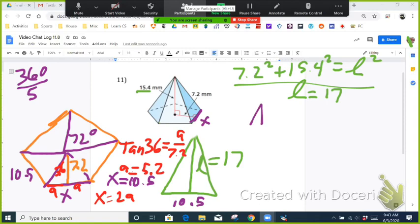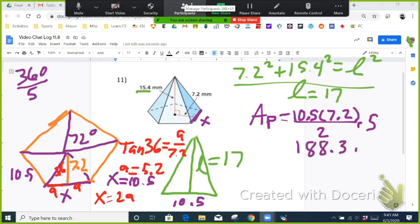And first, we're going to find the area of the base. We'll call it A of P for the pentagon. That's going to be 10.5, which is the length of each side, times 7.2, which is the height of each triangle, divided by 2, and then times 5. So if I type that in the calculator, we get that the base has an area of 188.32 square millimeters.